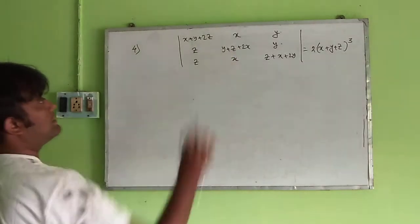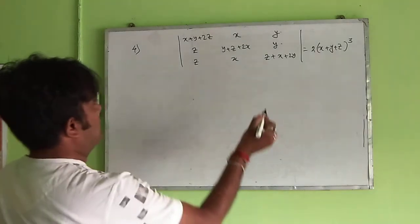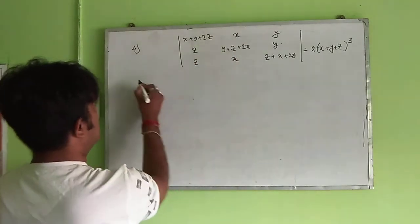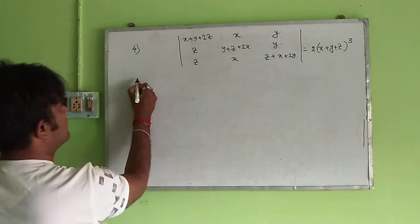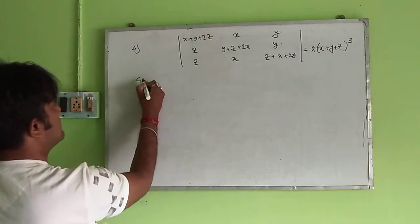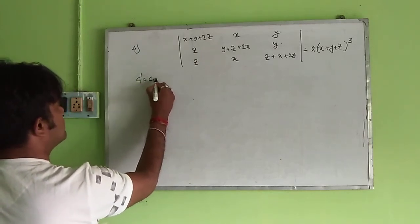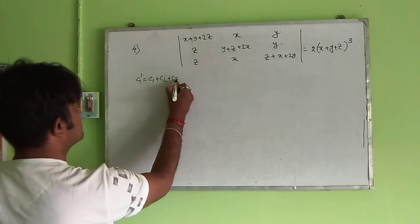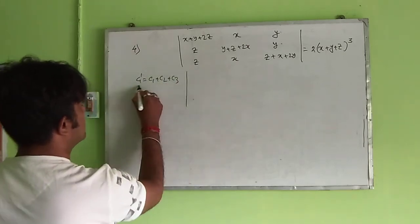Determinant number 4 will prove that, like previous example, we do this operation: c1 dash is equal to c1 plus c2 plus c3.